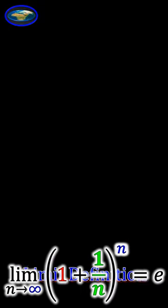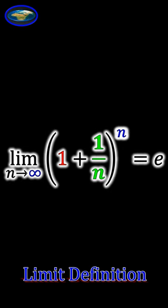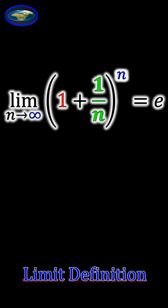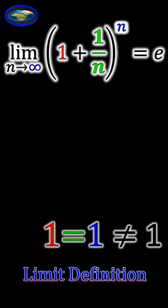This is the famous definition of Euler's constant. We know this constant is not equal to 1, but do you know why it is not 1? Someone might say it is because sometimes 1 is not equal to 1, which is obviously wrong, right?